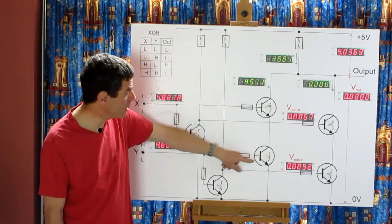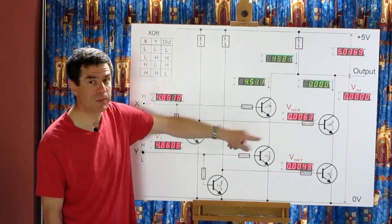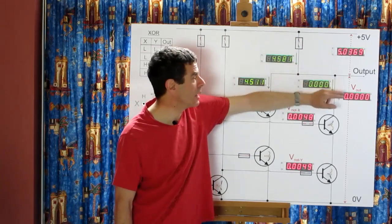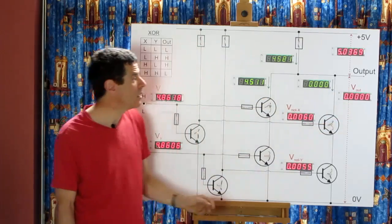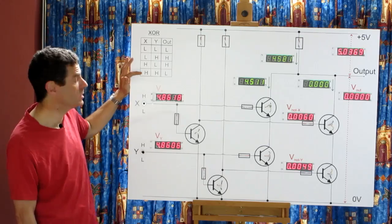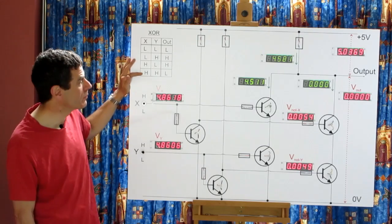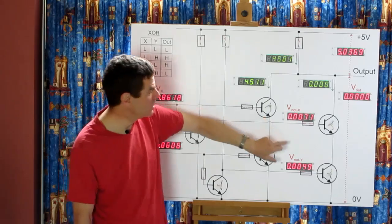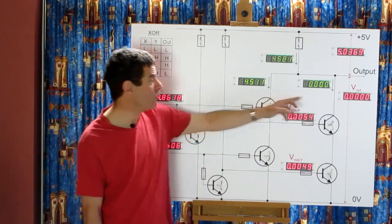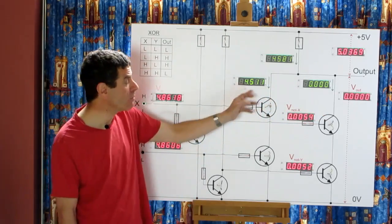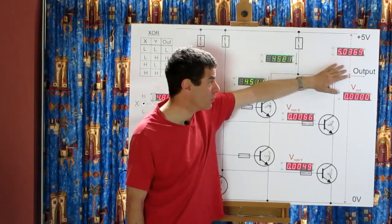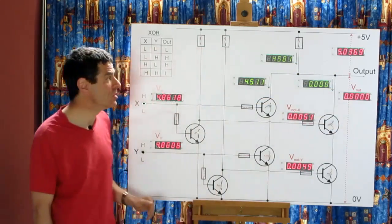And this pair of transistors is in parallel with this pair of transistors. Current can flow through either of those. If current is flowing through either of those, it's flowing through here and we get our voltage drop and our output goes to zero.